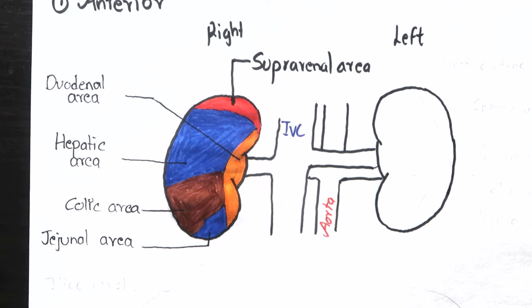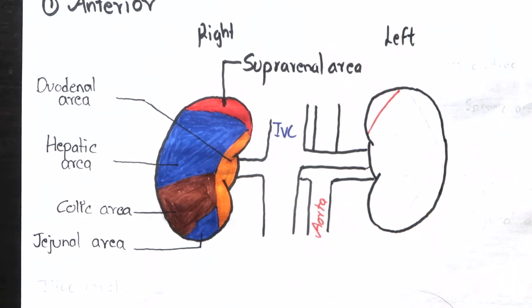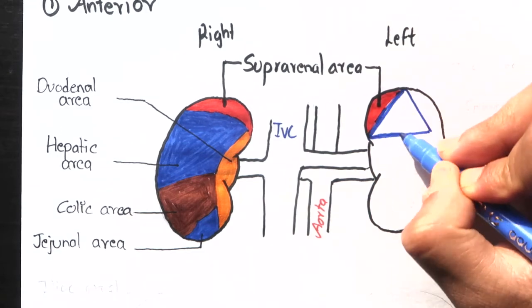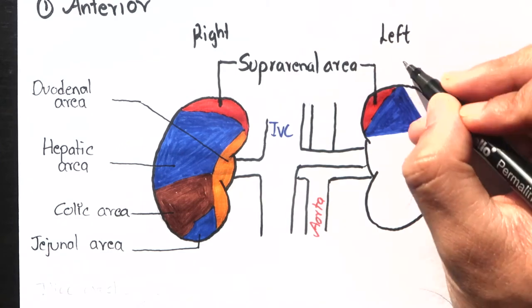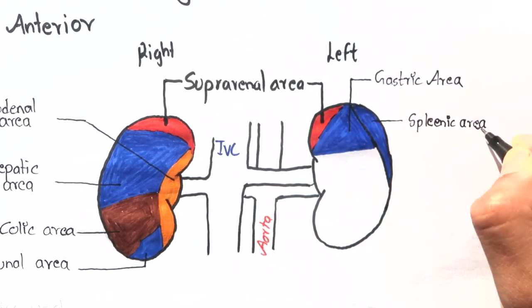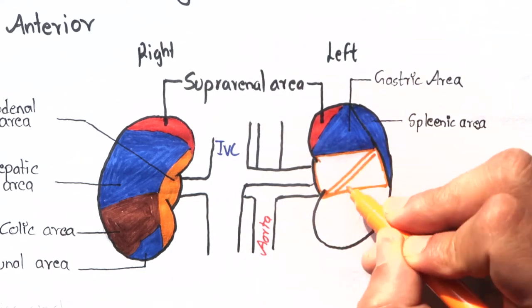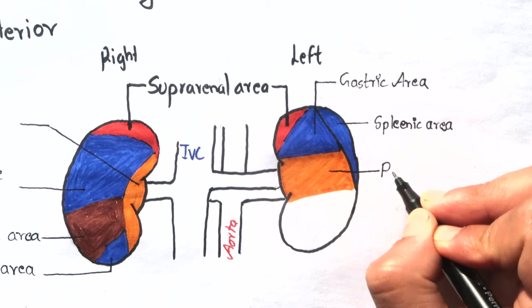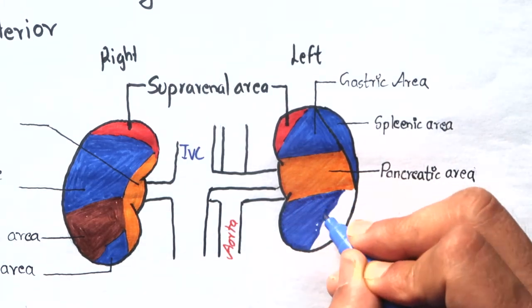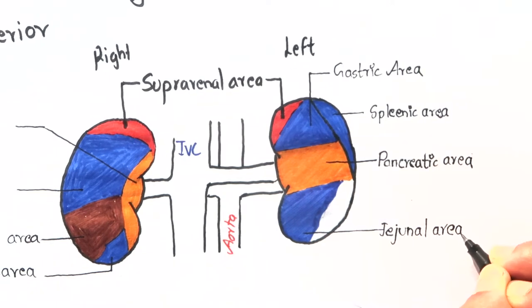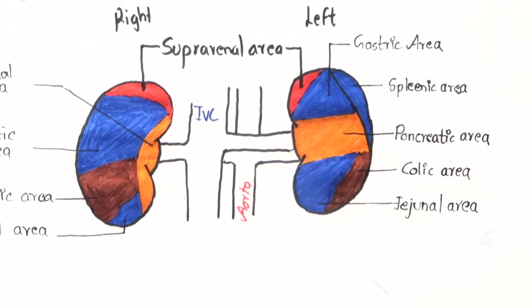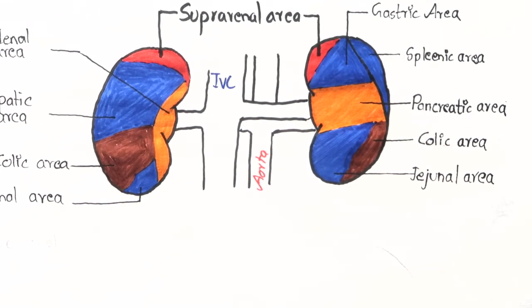Now moving on to the anterior relation of the left kidney. Again, the uppermost part is covered by the left suprarenal gland. And then we have gastric area, colic area, splenic area, pancreatic area, jejunal area and at last colic area. And again the areas colored in blue are covered by the peritoneum.